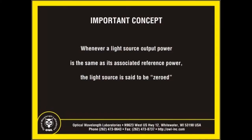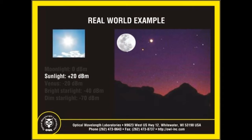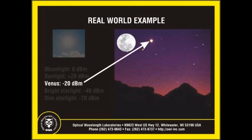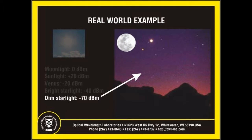Whenever a light source output power is exactly the same as its reference level, comparing these two values will result in a decibel value that is zeroed. To help reinforce the positive, negative, and zero dBm concept, the sun, moon, and stars can be used as a real-world example. For argument's sake, let's say the full moon on a clear night represents zero dBm. Sunlight might be positive 20 dBm, since it is much brighter than the moon. Venus could be minus 20 dBm. Normal stars might be minus 40 dBm. And stars that are barely detectable might be said to be minus 70 dBm.